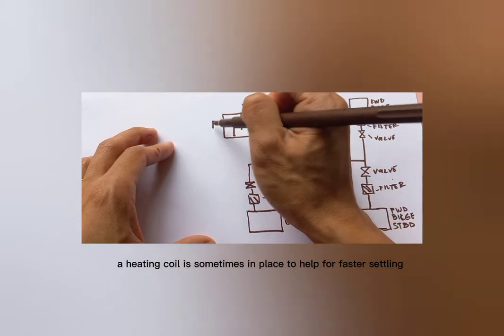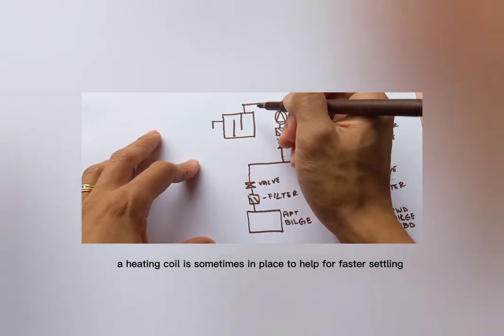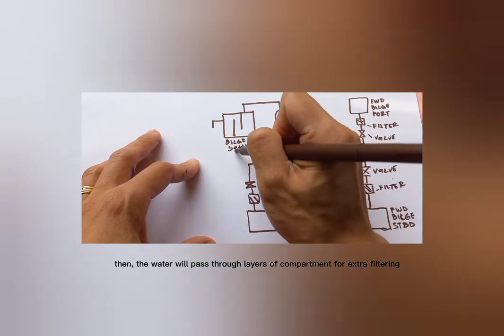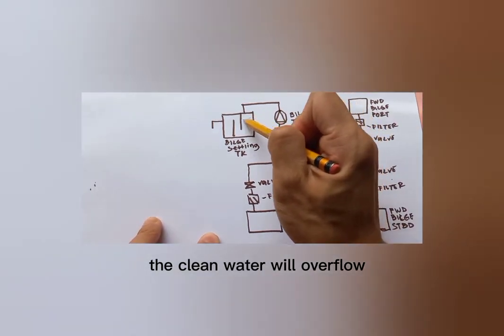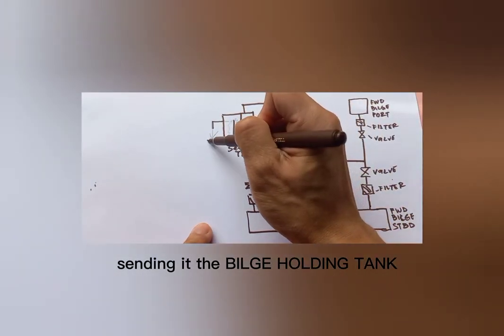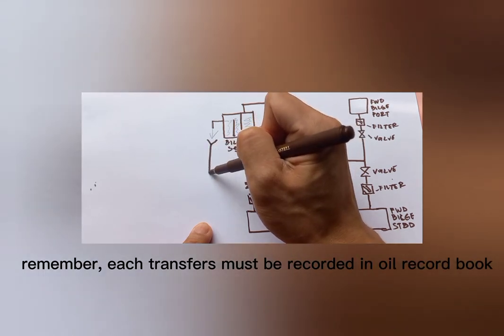A heating coil is sometimes in place to help for faster settling. Then the water will pass through layers of compartments for extra filtering. The clean water will overflow sending it to the bulge holding tank.